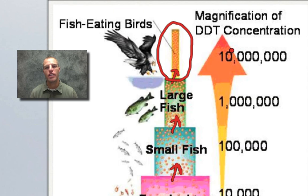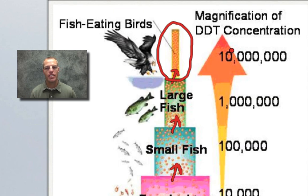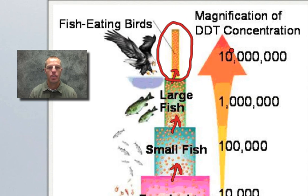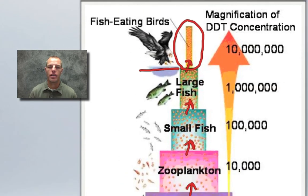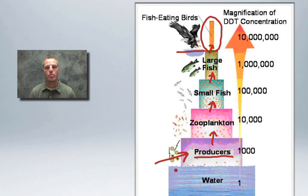The reason concentration increases up the food chain is that DDT dissolves into lipids and fats — unlike sugar which dissolves in water. When one organism is eaten by another, the DDT stays stored in fats and becomes more concentrated in each successive organism. This makes the falcon at the top of the food chain far more affected than the producers at the bottom.